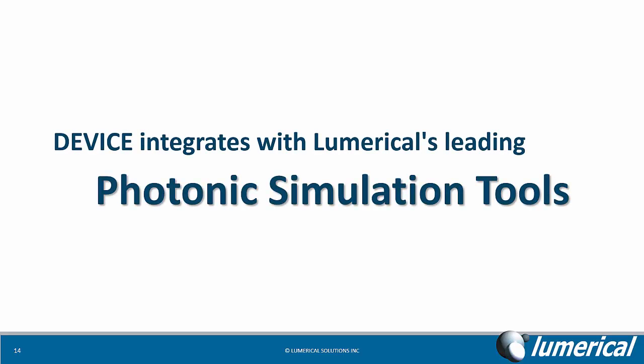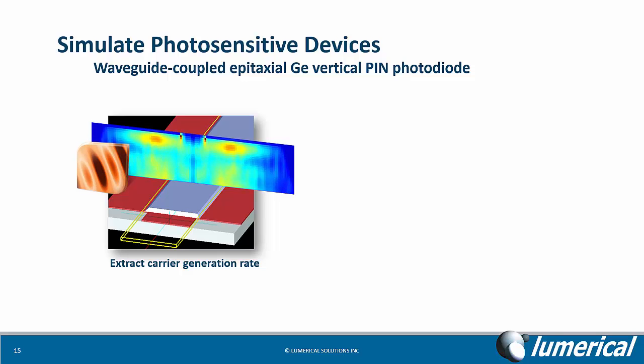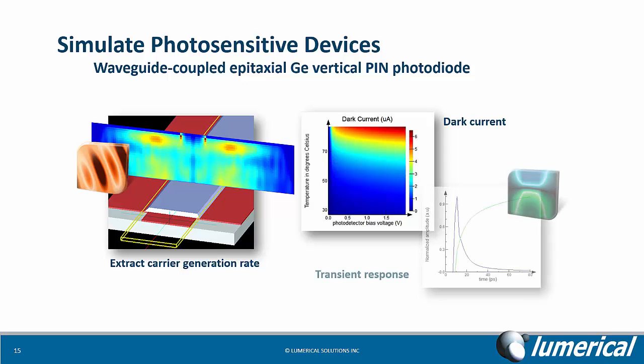Device integrates well with Lumerical's leading photonic simulation tools to support components that require multi-physics. For example, to simulate a photosensitive device like the photodiode shown, we start with the optical simulation in FDTD Solutions and extract the carrier generation rate. Device's charge transport solver can be used to independently simulate the dark current characteristics, and we can also use the generation rate from the optical simulation as a source to obtain the transient response under illumination.